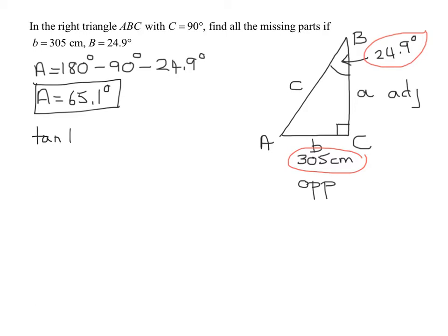So we know the tangent of angle B is opposite over adjacent. So the tangent of 24.9 degrees equals the opposite side, which was B, which was 305, all divided by the adjacent side, which was A.